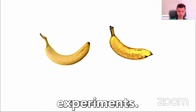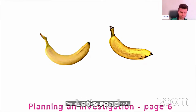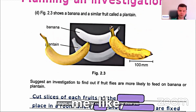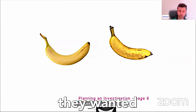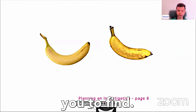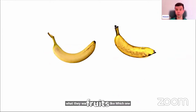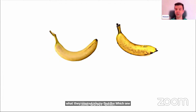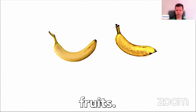So here are the experiments. Let me show you the question. Let's read the question first. They gave me two fruits and they wanted you to find which one of those two fruits — we have banana and the other one, they called it 'plenty' — just two fruits.